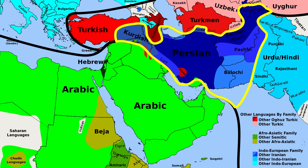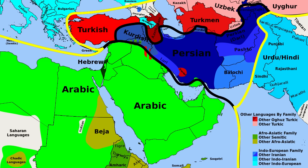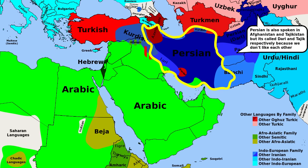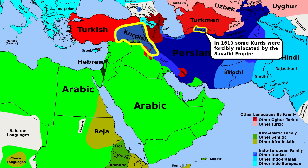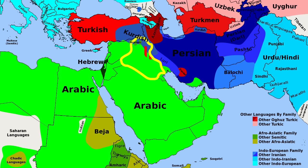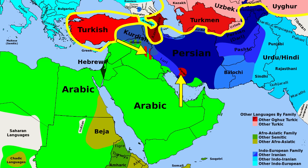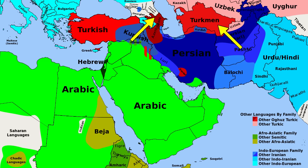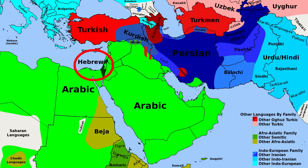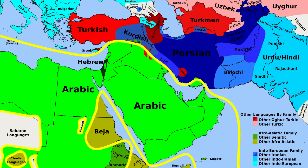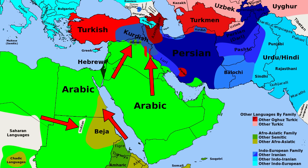Persian and Kurdish are both in the Iranian branch of the Indo-European language family, meaning they are closely related to each other and distantly related to some languages of Europe and India. Persian is the official language of Iran, though many other languages are spoken, such as Kurdish, which is also spoken in parts of Turkey, Iraq, and Syria, but is only an official language in Iraq along with Arabic. The official language of Turkey is Turkish, which is in the Turkic language family, closely related to Azerbaijani and Turkmen. In Israel, Hebrew is the majority language, but both Hebrew and Arabic are official languages. Arabic and Hebrew are related Semitic languages, part of the Afro-Asiatic language family. Arabic is the official language of the rest of the countries of the Middle East.